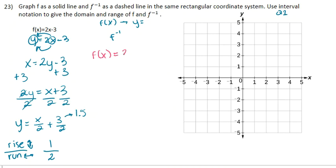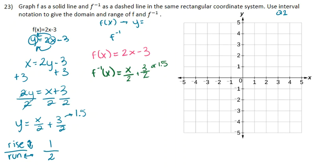We have our given f of x equals 2x minus 3. And our inverse function, x half plus 3 halves. Or you can write this as 1.5, whichever makes you understand it better. I'm going to start by graphing our first function. Looking at our y-intercept, which is our negative 3, because y equals mx plus b.